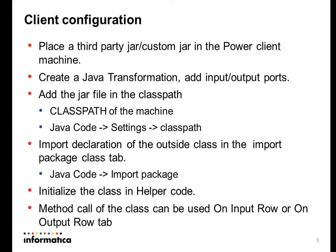You can initialize the classes or call the constructors in the helper code of the Java transformation. Lastly, on the input row or output row, you have to build or call the APIs which are part of the third-party JAR.